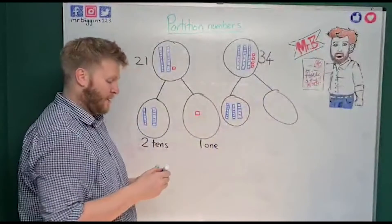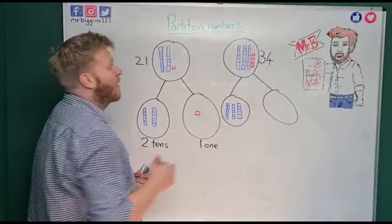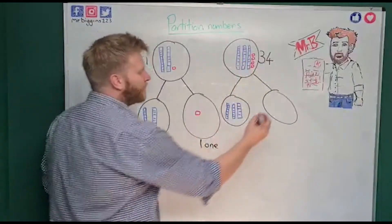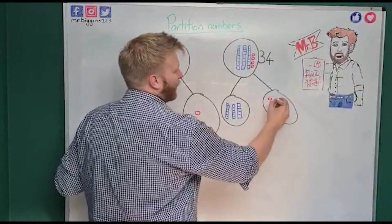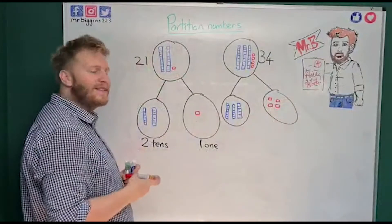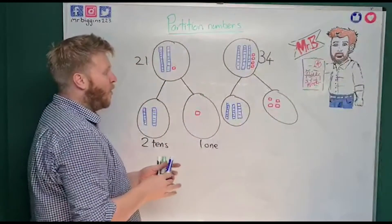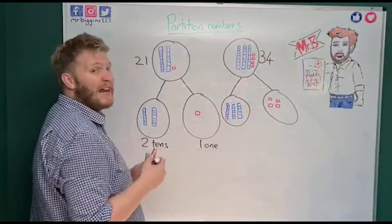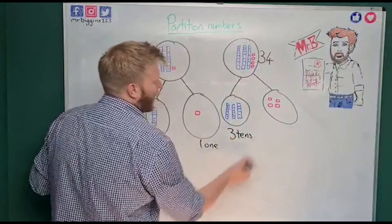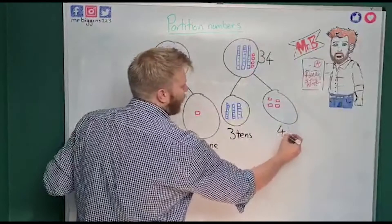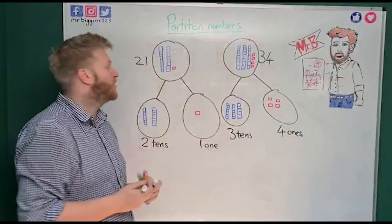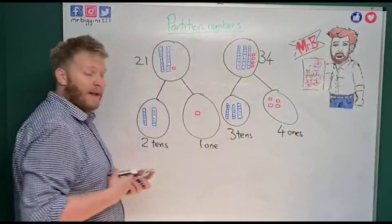Now I'm going to put my ones in there — have a quick think how many ones are going to go in there. Let's count them: one, two, three, four — four in my ones column. So I put my four ones there. I can see now that my 34 is broken down into three tens and four ones. I've partitioned both numbers.